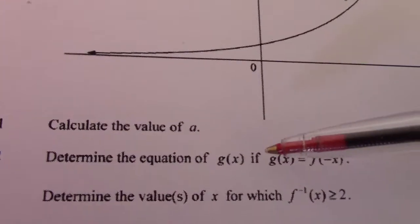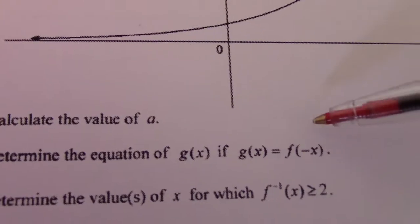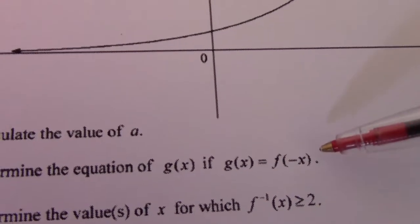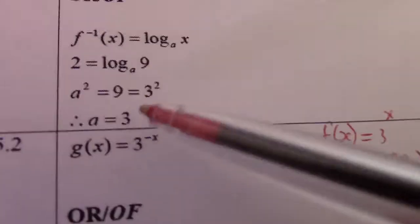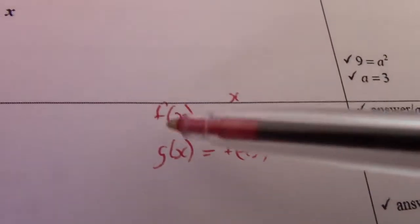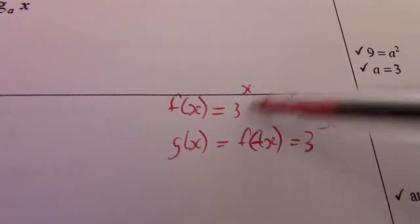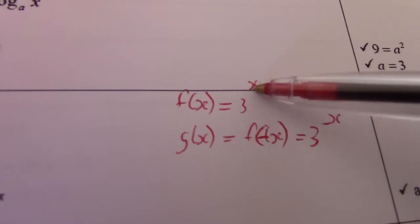5.2: Determine the equation of g of x if g of x equals f of negative x. So first, we've got a as 3, so we should know f of x then equals 3 to the power x. Instead of a, now I wrote 3.